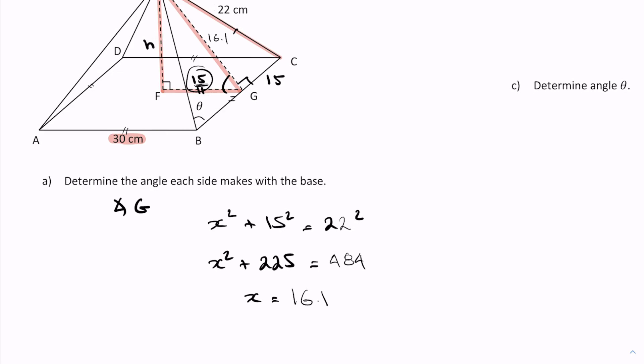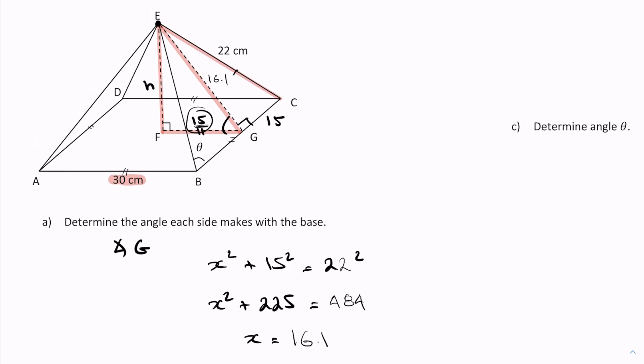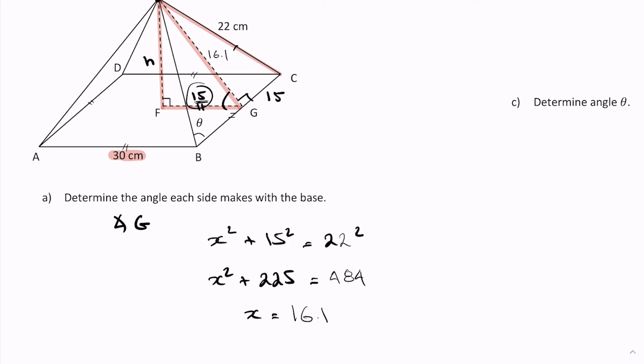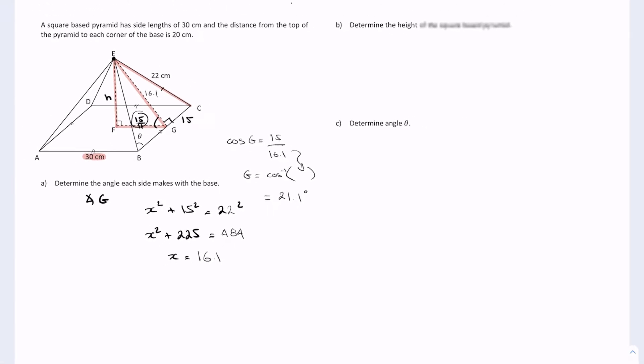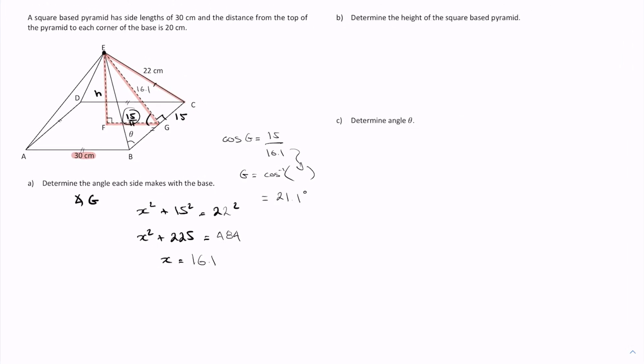For that, I'm going to use SOHCAHTOA. I think cosine is the best candidate here. I have cos of G equals 15 over 16.1, so G equals cos inverse of whatever that is, which equals 21.2 degrees.